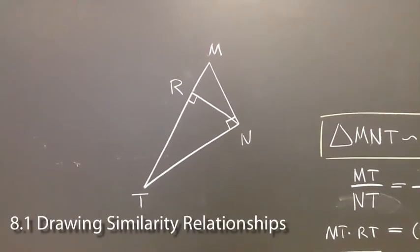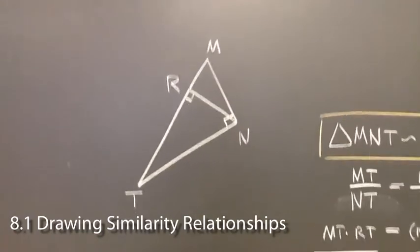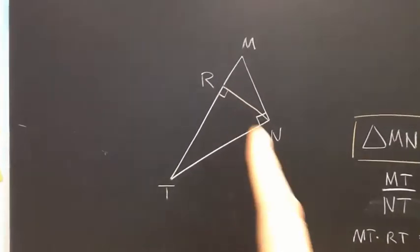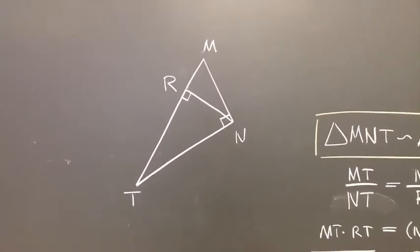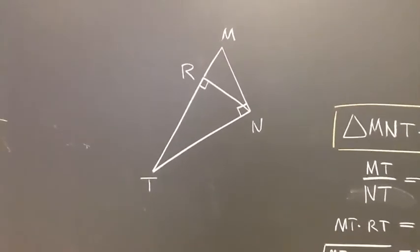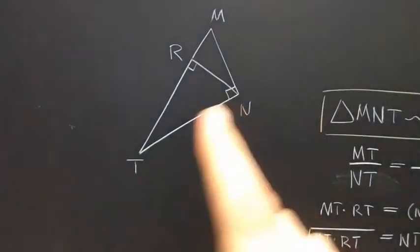Okay, in lesson 8.1, we're talking about similarities in triangles, particularly right triangles, and this kind of similarity that happens when you draw an altitude. The objective of this video lesson is to talk about different ways you can draw the triangle and using different letters for the vertices.